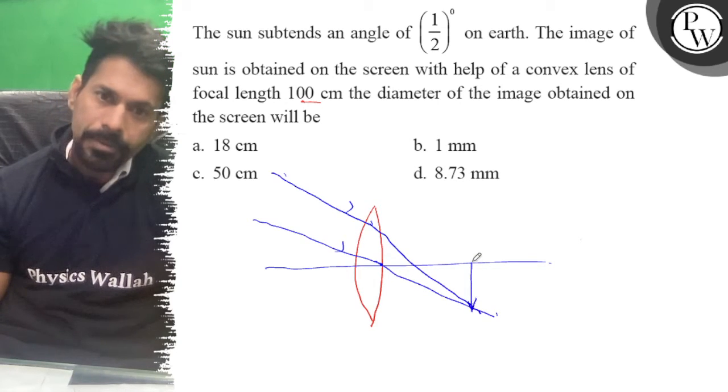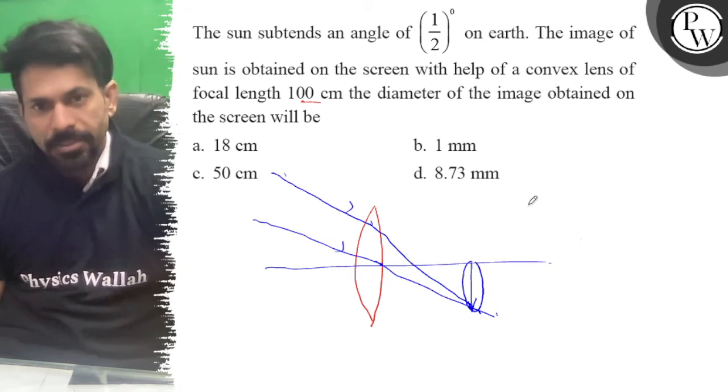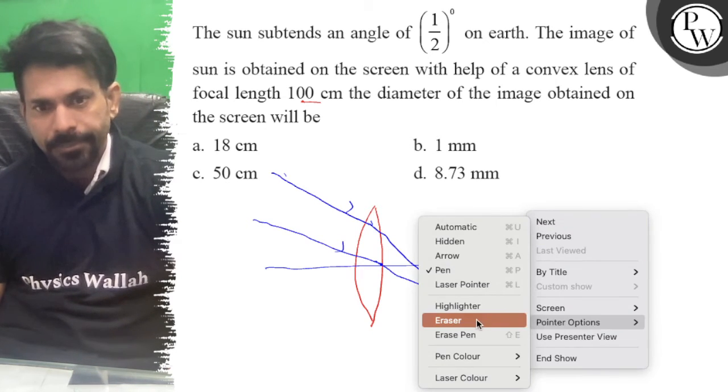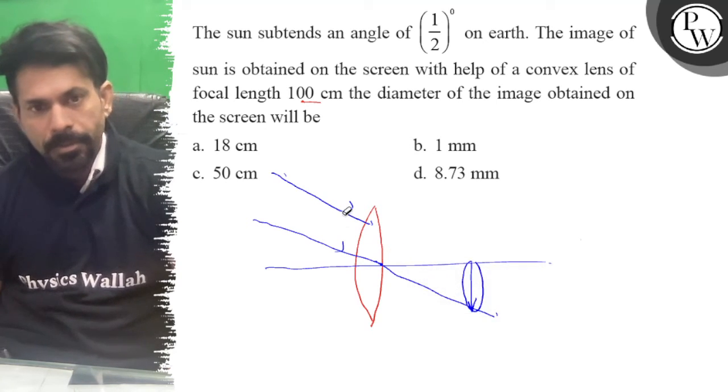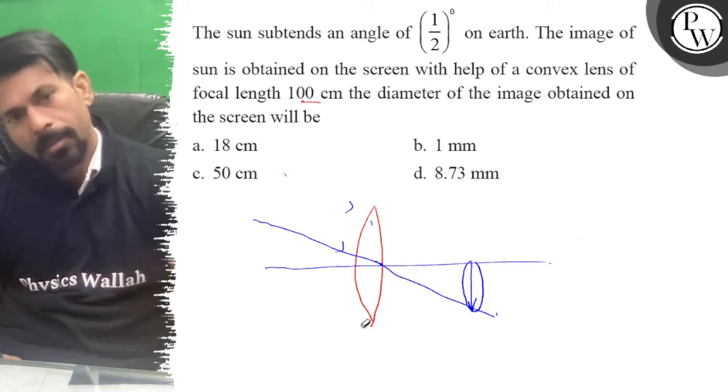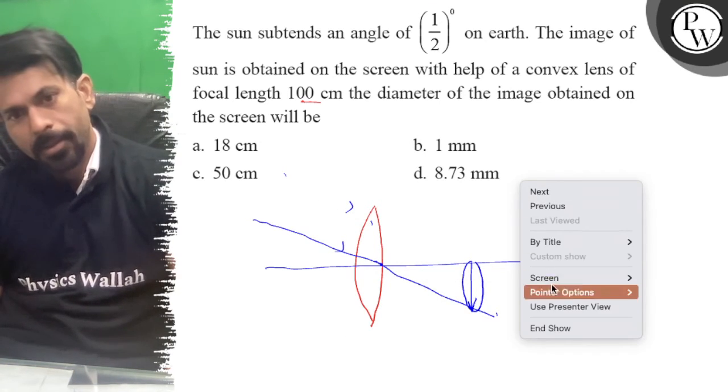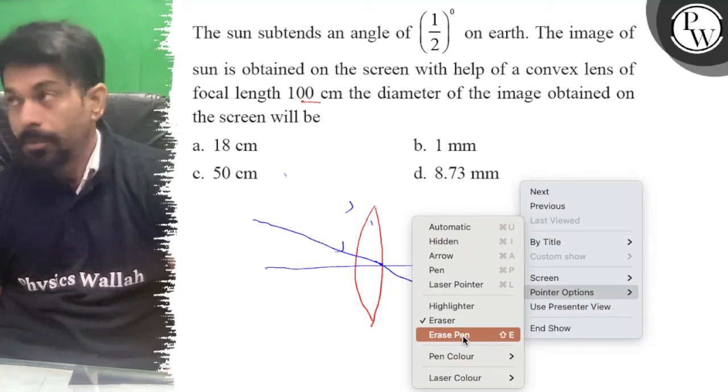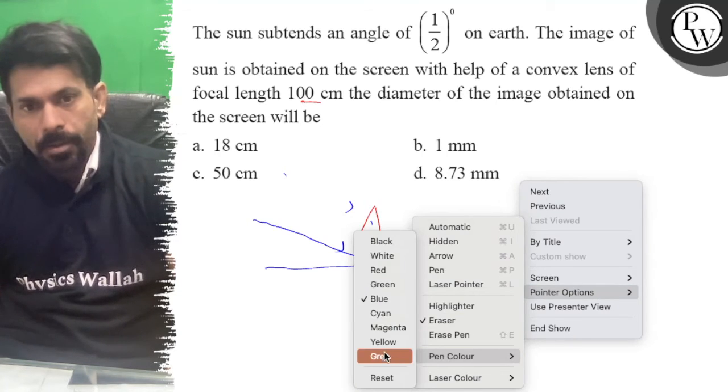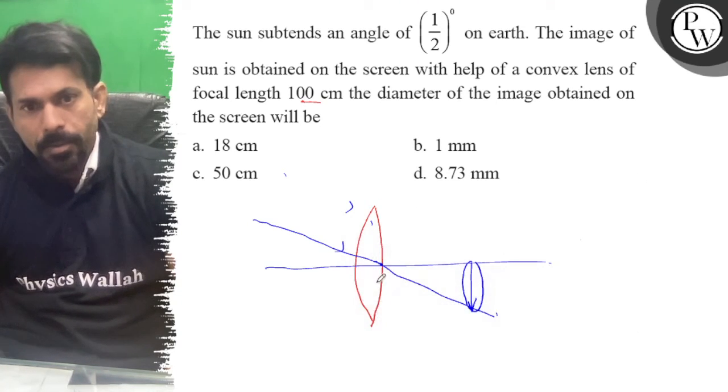So this is the image of the sun. If I follow this ray, the triangle represents the angle.